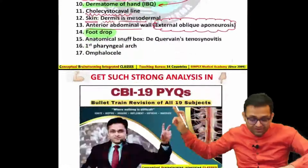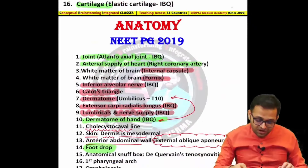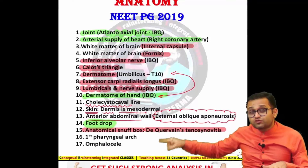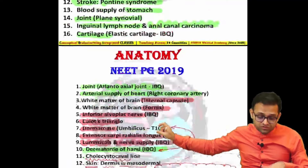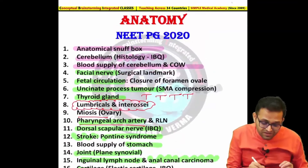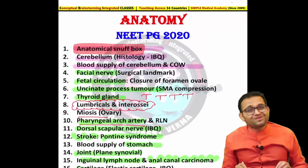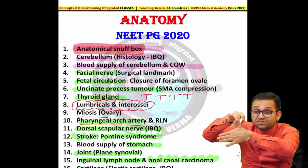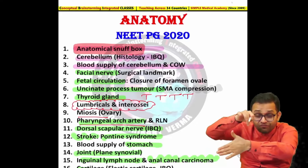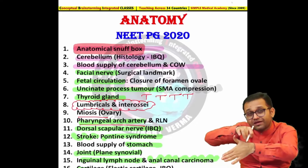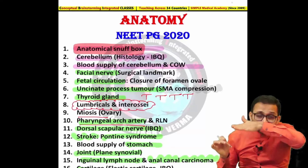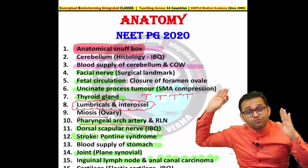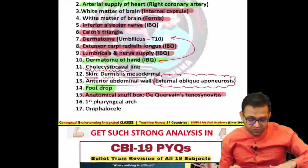The anatomical snuff box and de Quervain's tenosynovitis are from the same topic. It was asked in 2019 and repeated in 2020 — we cannot forget the anatomical snuff box. It is a box-like structure seen when the thumb is hyperextended, and people used to place snuff there. Please don't leave this topic.